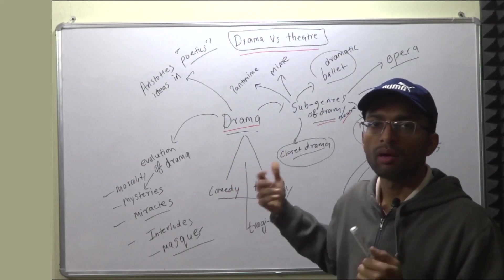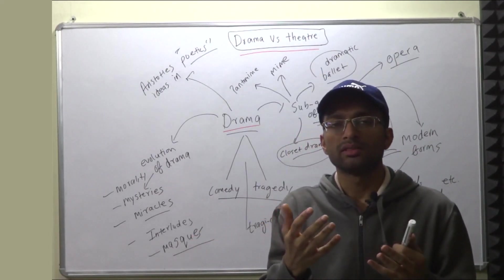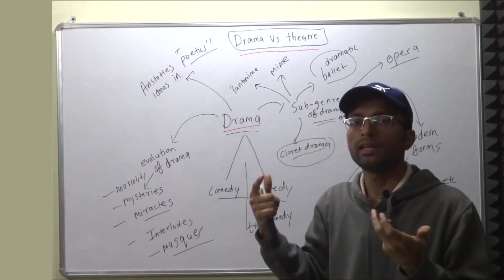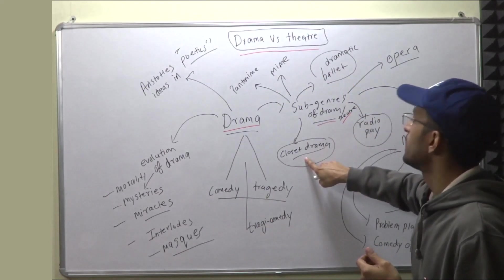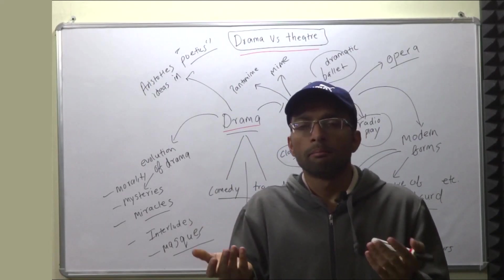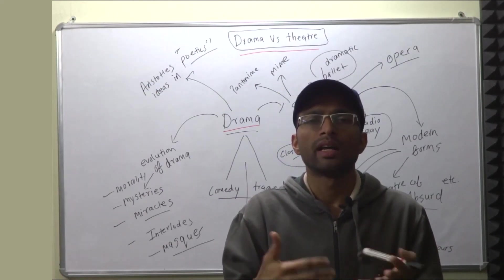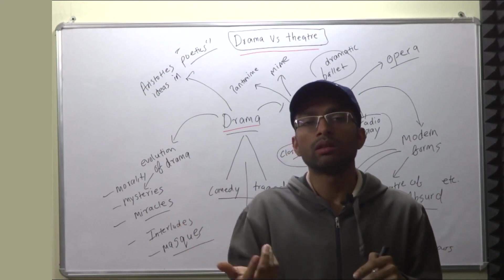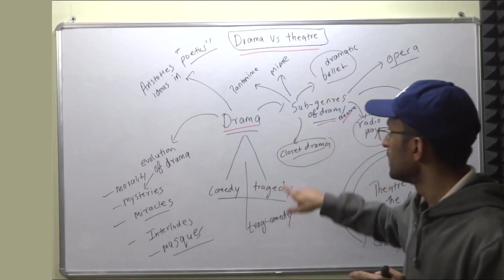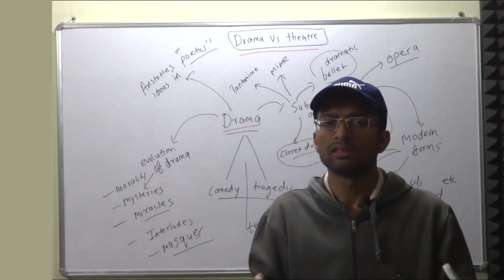There are some other sub-genres of Drama as well. For example, Mime — in Mime, whatever there is, is just gestures; there is no speech. Then, what is Pantomime? This is mostly related to children — it can be called a children's play type. Then, what is Closet Drama? Closet drama is a very early form of drama where all you have to do is read from the play. It was mostly meant to be read aloud, not meant to be performed. Even Elizabethan plays were written to be performed, but Closet Drama is only meant for being read.